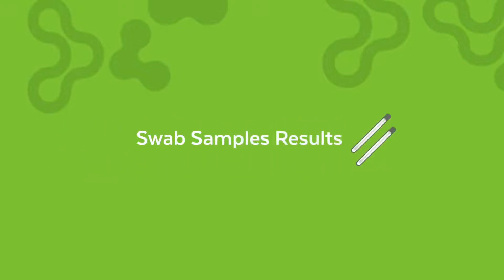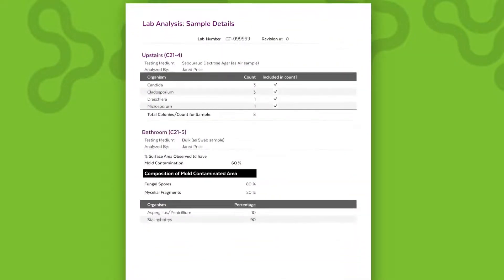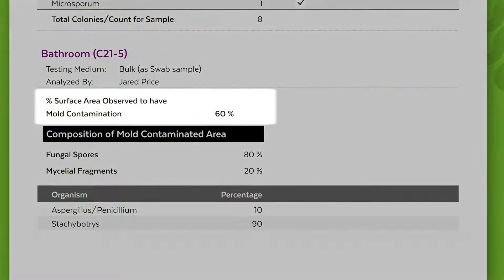Interpreting swab samples or bulk results. Refer to the swab results on the samples details page. The percentage surface of area observed to have mold contamination is an estimation of the amount of the swab surface that is covered by mold. 10% or greater typically indicates mold contamination of the sampled area.